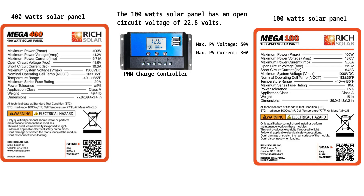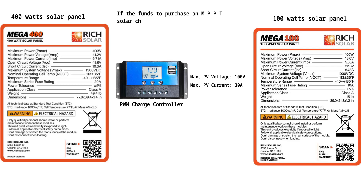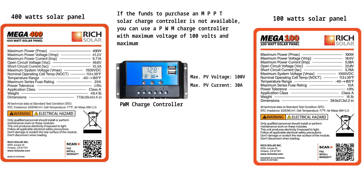The same PWM charge controller rated at 50 volts max cannot be used for the 400-watt solar panel, because the 400-watt solar panel outputs 49.6 volts as its open-circuit voltage. An MPPT charge controller will be the best choice for this high-voltage solar panel, boosting efficiency by 20–30% compared to a PWM charge controller. An MPPT charge controller of 80 volts maximum and 20–30 amps maximum will work. If funds are unavailable, a PWM charge controller with a maximum voltage of 100 volts and 30 amps maximum can be used.